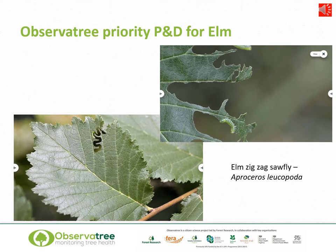Elm zigzag sawfly is an introduced pest from eastern Asia. This pest poses a serious threat to our elm trees, which are already in rapid decline due to the introduced Dutch elm disease. Additional losses of elm would further threaten our elm-dependent species such as the white letter hairstreak butterfly. The larvae look like small green caterpillars and feed on elm leaves in a distinctive pattern, producing a zigzag between the leaf veins. As the larvae mature these patterns become less noticeable and eventually they stop feeding in this manner. Other signs include dieback and loss of leaves.